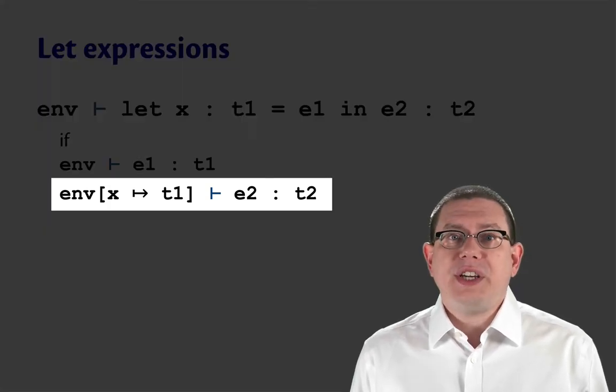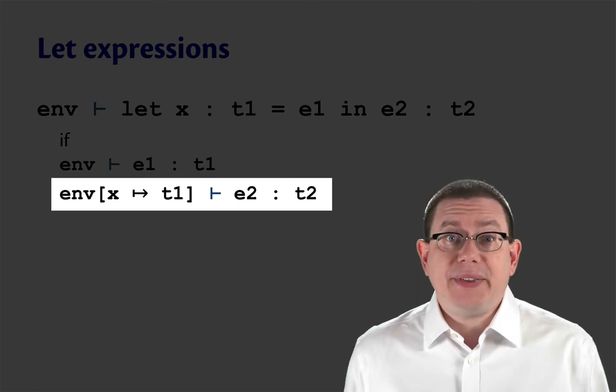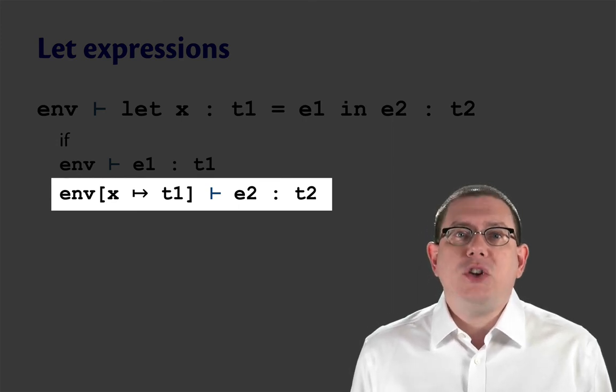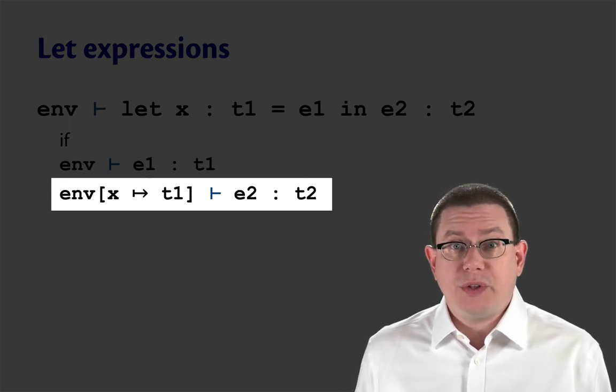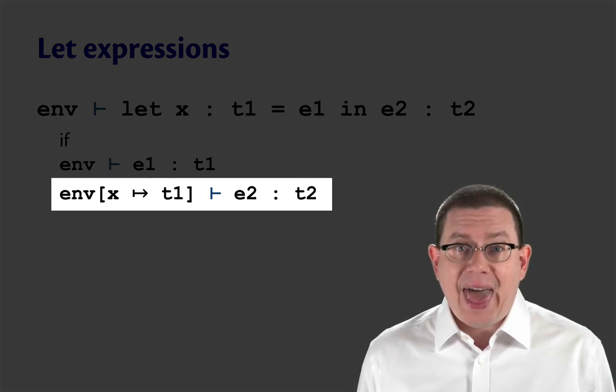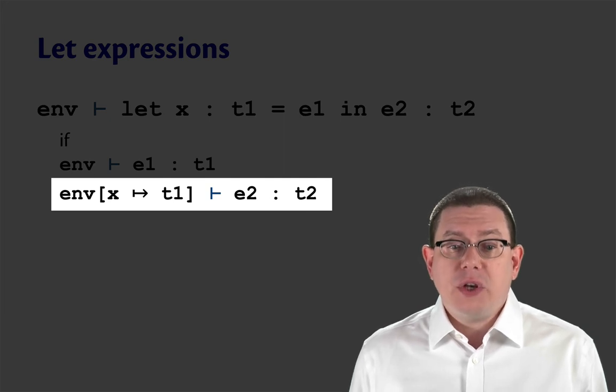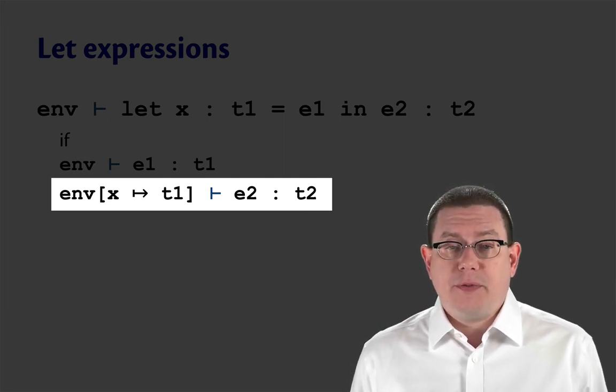Then we recurse into e2 and type check there, but in a new static environment. So this is the first time we've changed the environment in all of these rules.